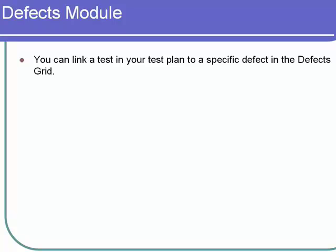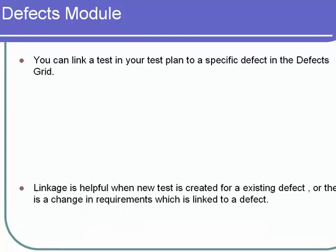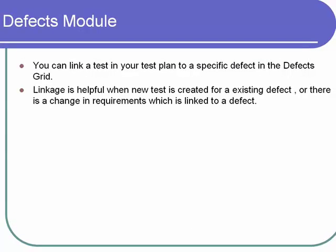You can link a test in your test plan to a specific defect in the defects grid. Linkage is helpful when a new test is created for an existing defect, or there is a genuine requirement which is linked to a defect.